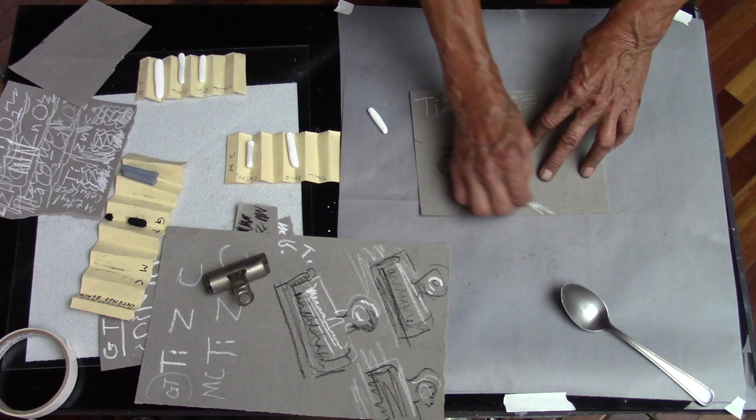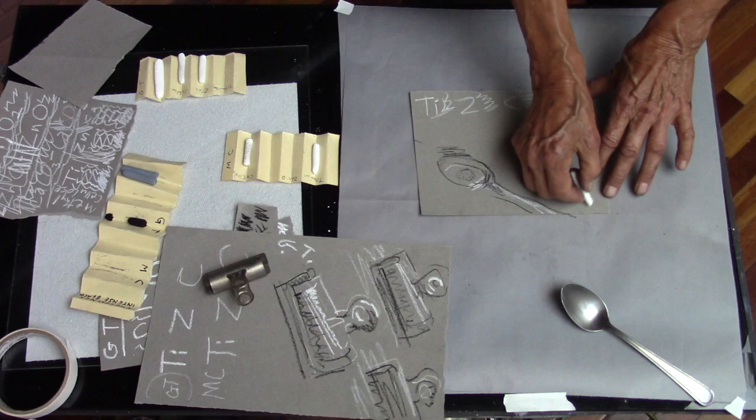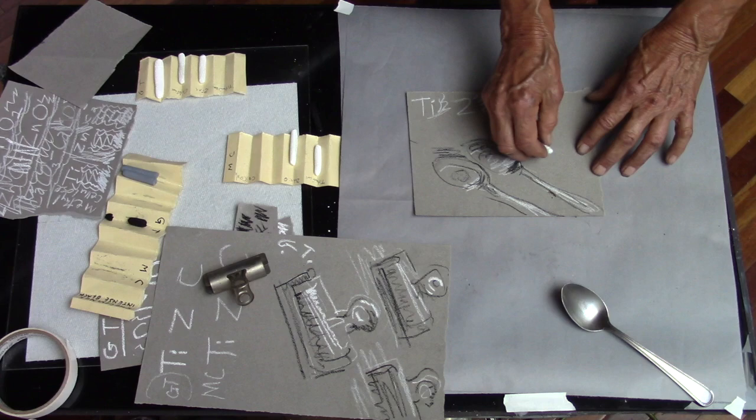This is the titanium. And this is a black gum tragacanth binder. Now we'll try the zinc. And here's the calcium carbonate.